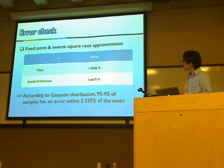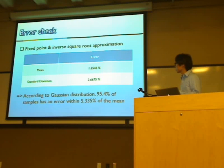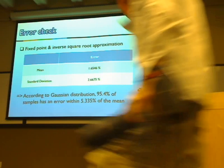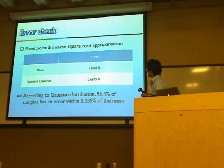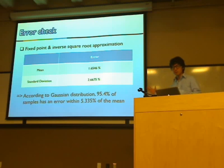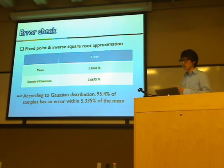Next is the error simulation. After choosing the algorithm, we simulated it in MATLAB with 16-bit precision and an inverse square root approximation function. The results show a mean error of 1.6 percent and a standard deviation of 2.7, meaning 95 percent of samples have an error within 5.3 percent of the mean. Each element of the output has errors within 10 percent, which is acceptable.